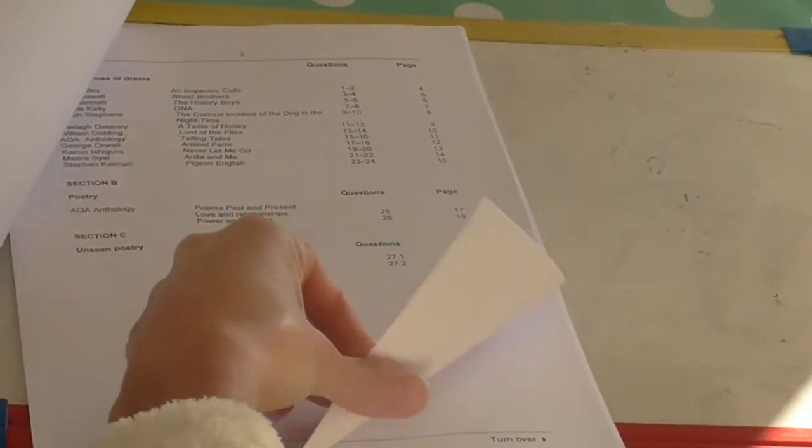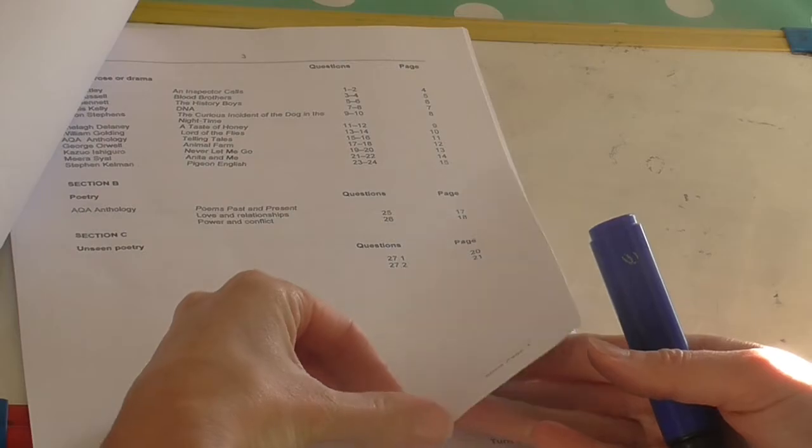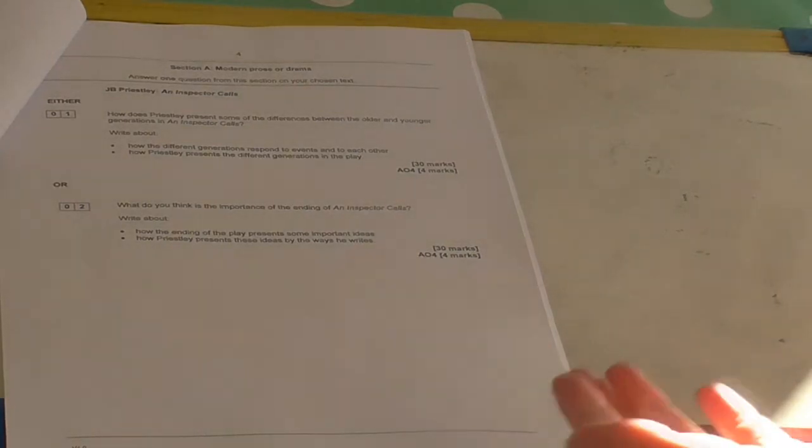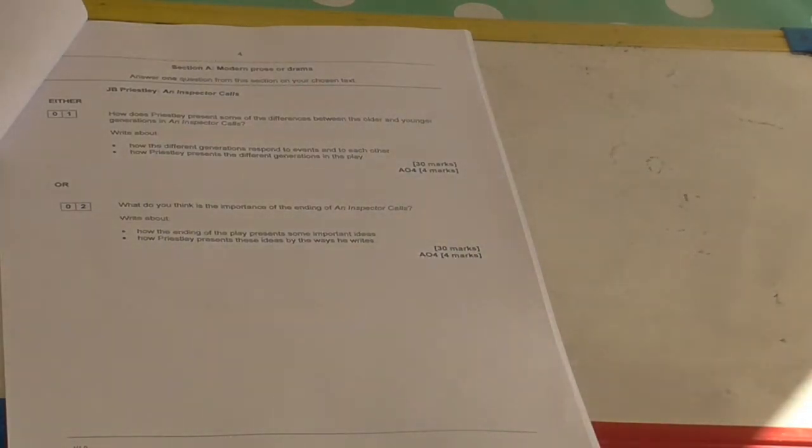In the first section, you will be expected to write an essay about your chosen text, which is modern prose or drama. For example, if you are studying An Inspector Calls, you get the choice of two questions. For example, how does Priestley present some of the differences between the older and younger generations, or what do you think is the importance of the ending. Then you have two bullet points there to help you trigger some of your ideas. They're both worth 30 marks and the idea is that you pick one reasonably quickly. Usually, they are asking you about a character or a theme.